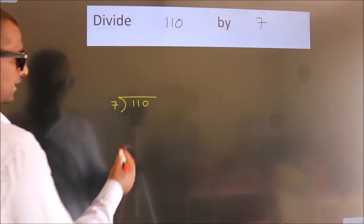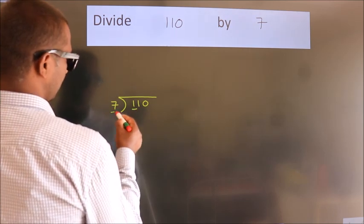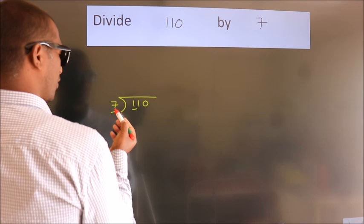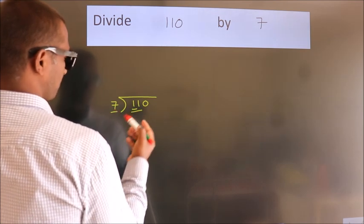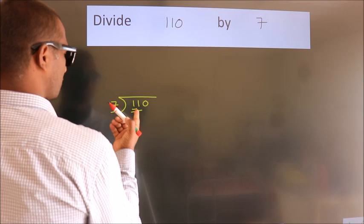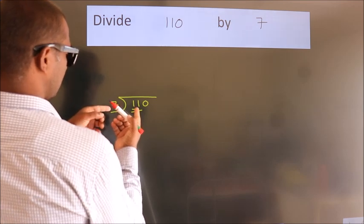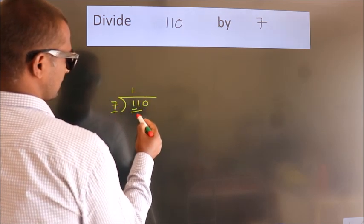Next. Here we have 1, here 7. 1 is smaller than 7. So we should take two numbers: 11. A number close to 11 in the 7 table is 7 once 7.